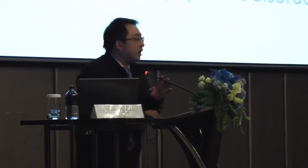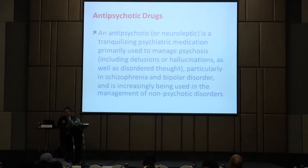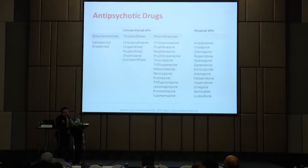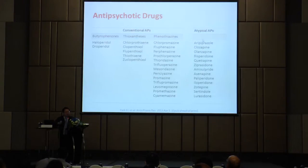Starting with the definition of antipsychotics — antipsychotics are the old terms we already know as neuroleptics or major tranquilizers. These are used mainly for managing psychosis or schizophrenia. Right now, we have about 20 antipsychotic agents in the market in Thailand. We can classify antipsychotics into two major groups: the conventional antipsychotics and the atypical antipsychotics.